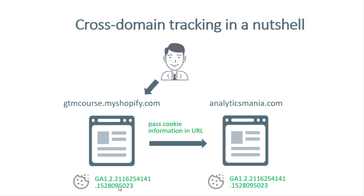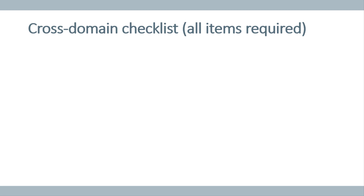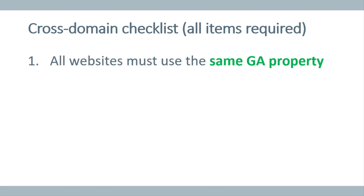Obviously, these cookie values shown are just dummy fake data and in reality they might look completely different. In order to properly configure cross domain tracking, all websites must use the same Google Analytics property. So website A and website B must be using the same Google Analytics 4 property.